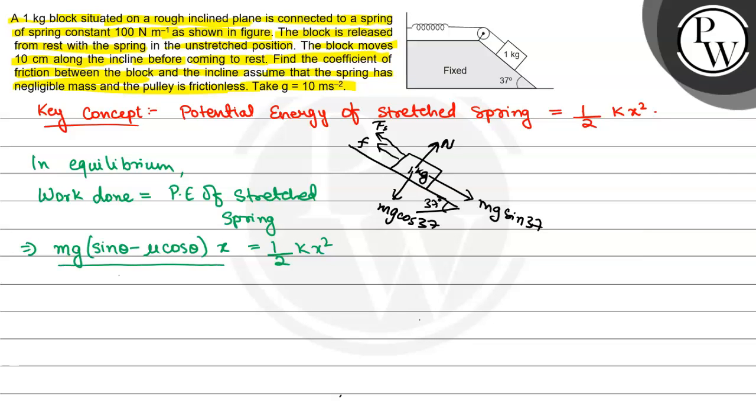This is Mg sin theta minus mu cos theta multiplied by x because this x is due to displacement and this is due to spring force.